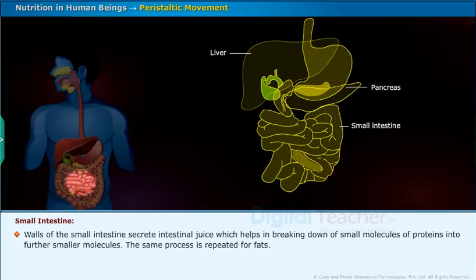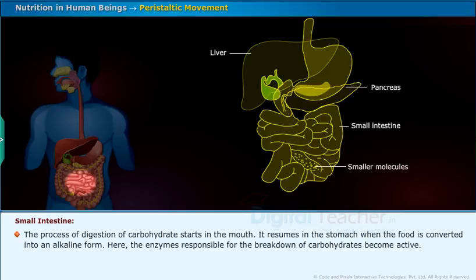The small intestine secretes intestinal juice, which helps in breaking down small molecules of proteins into further smaller molecules. The same process is repeated for fats. The digestion of carbohydrates starts in the mouth and resumes in the stomach when the food is converted into an alkaline form. Here, the enzymes responsible for the breakdown of carbohydrates become active.